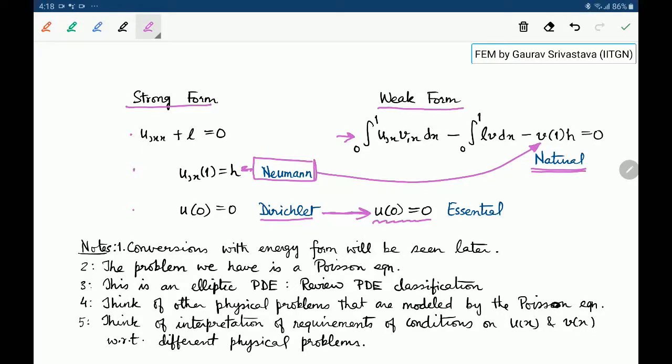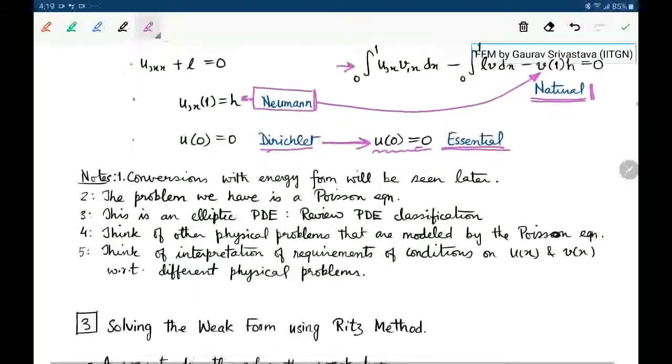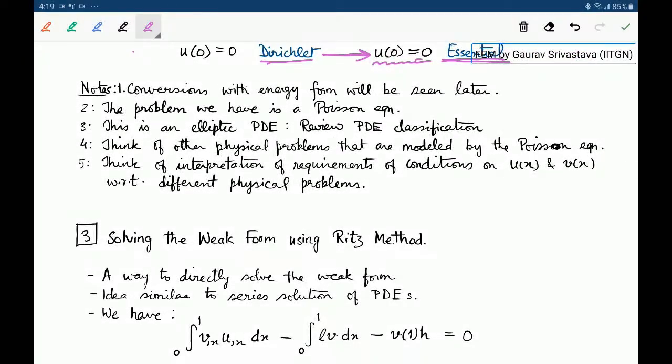From the weak form perspective, this is the natural boundary condition. Since this Dirichlet condition has to be enforced strictly, this is called an essential boundary condition. Essential because without imposing it there will be no unique solution for the weak form.